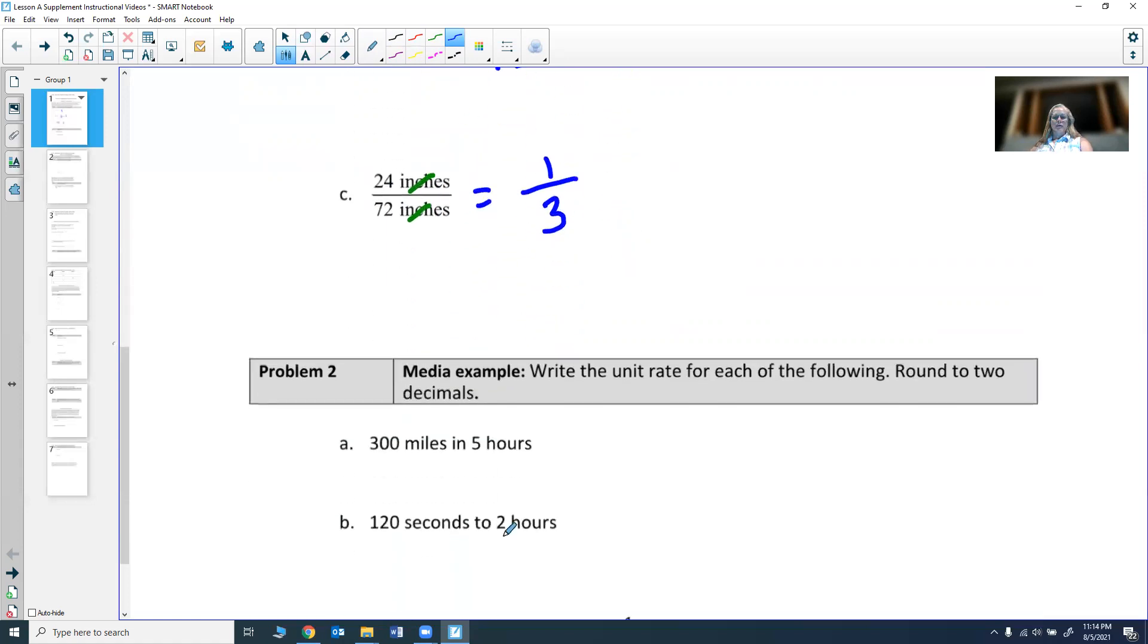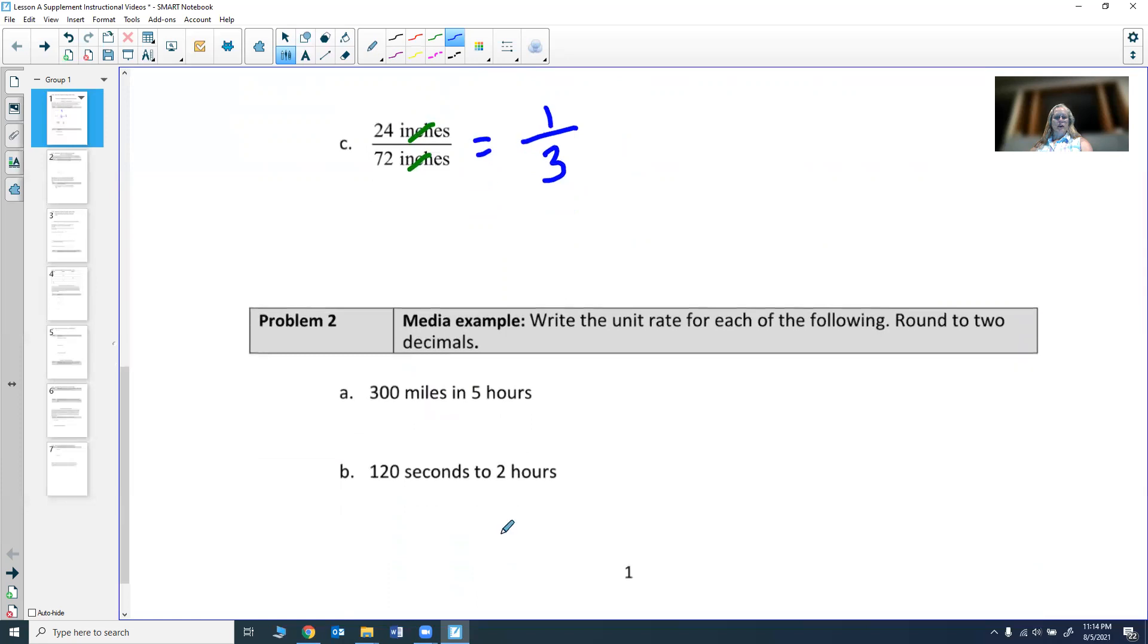Let's go ahead and write some unit rates for each of the following. So we have 300 miles in 5 hours. Usually when we're talking about rates, we usually like to put the distance first and then the time. It really doesn't really matter, but we're so used to doing miles per hour.